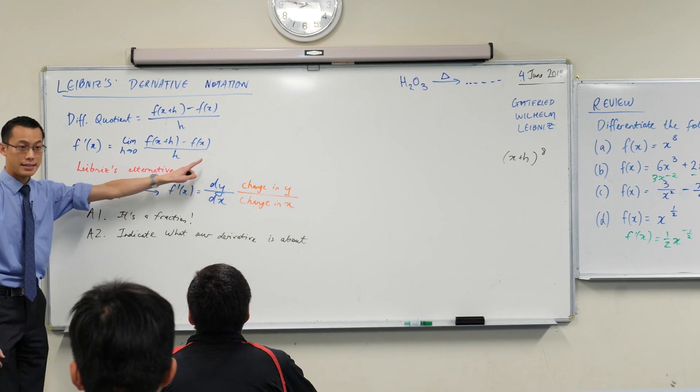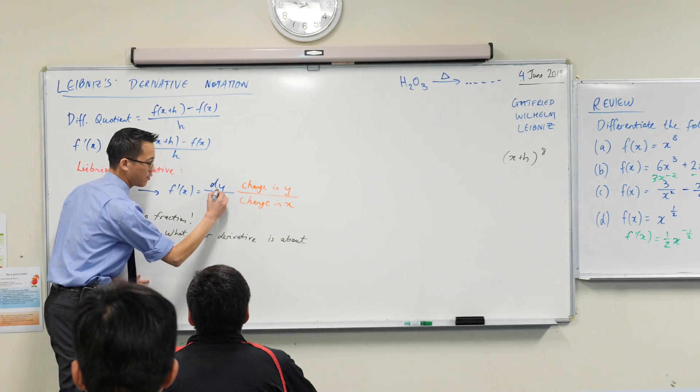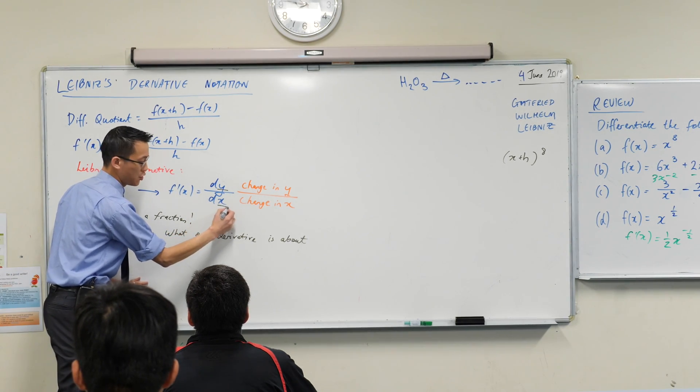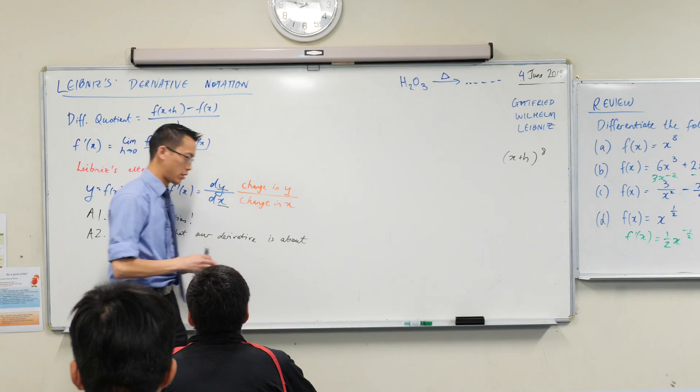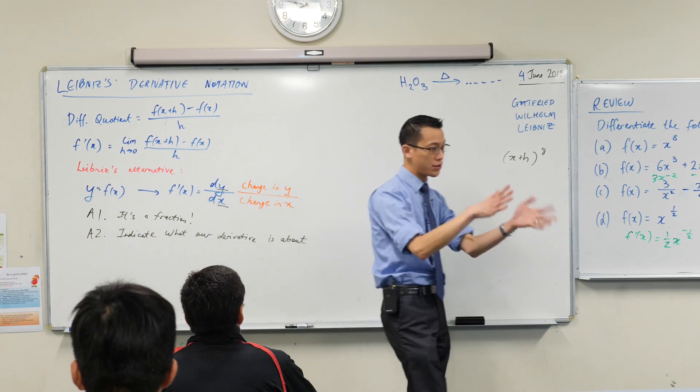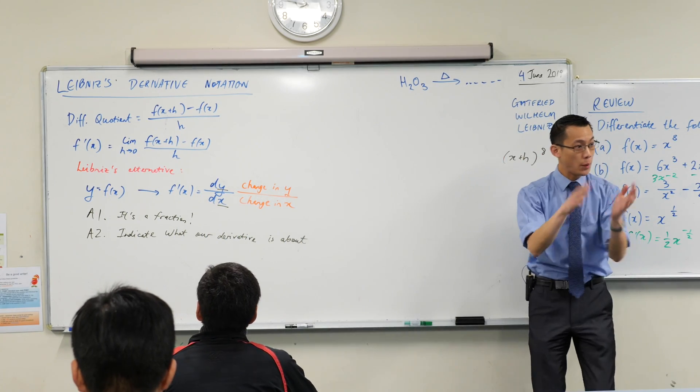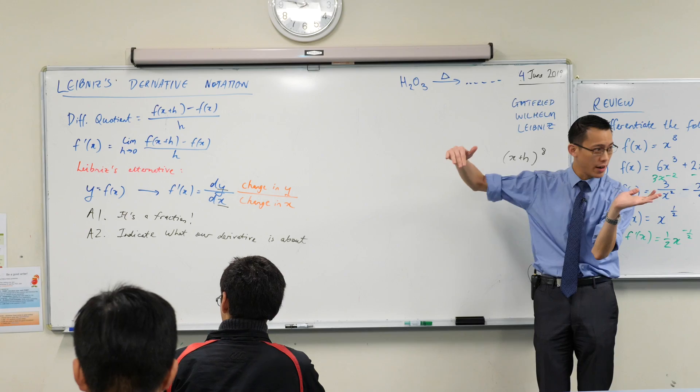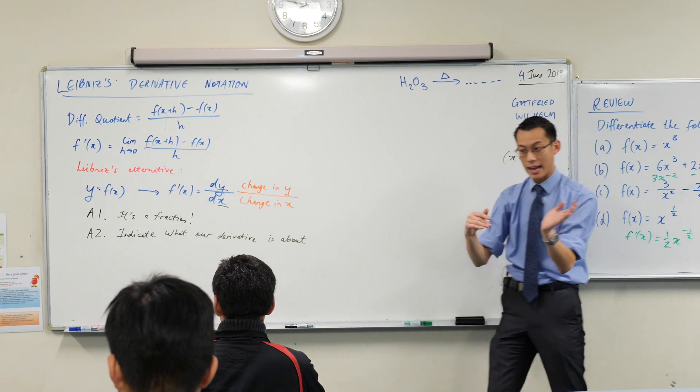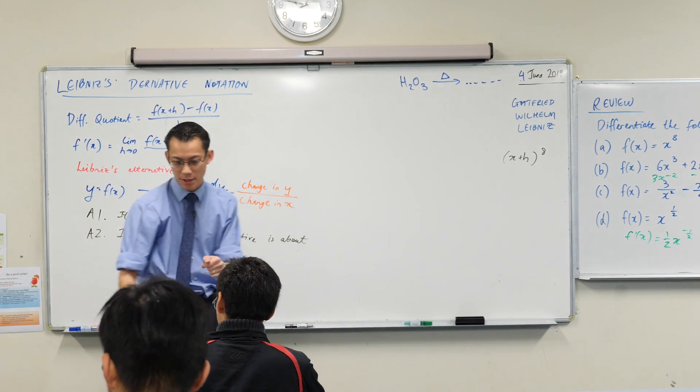When you see dy on dx, it indicates this is a derivative comparing y to x. Think back to when we were having a look at Usain Bolt, right? When we first drew, in fact, go back to that page, when we drew, remember we drew a Cartesian plane and we tried our best to draw a sort of curve that illustrated how he ran. Do you remember that? Can you just go find that spot?